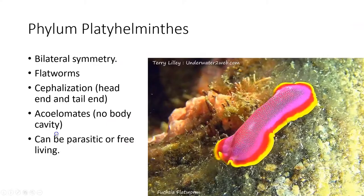Phylum Platyhelminthes literally means 'flat worms' — anytime you see 'helminth' it means worm, and 'platy' means flat. These look like worms that have been smooshed flat between book pages. This is our first group with bilateral symmetry, meaning there is only one way to cut them to get two equal halves. That means we have a head end and a tail end — we can begin to focus sense organs in one place and start developing a brain.